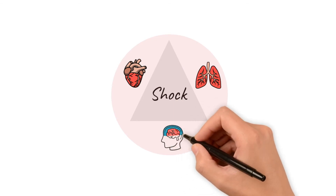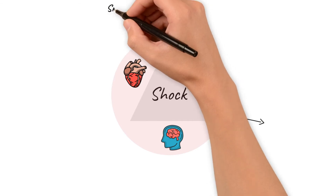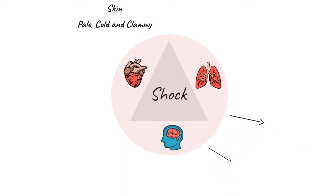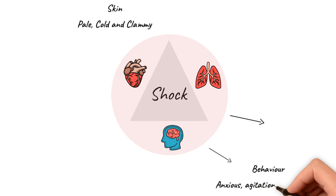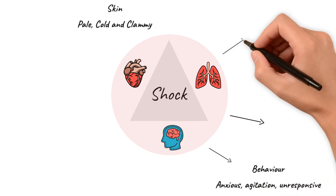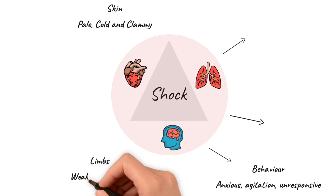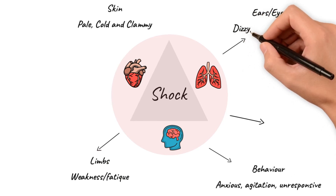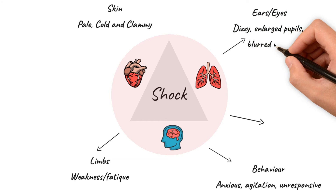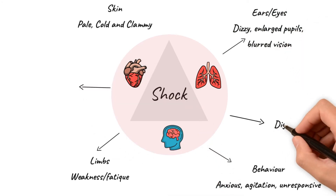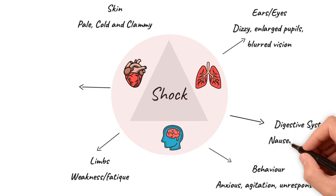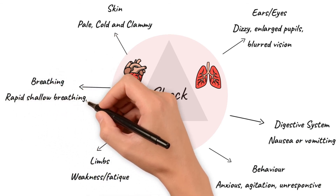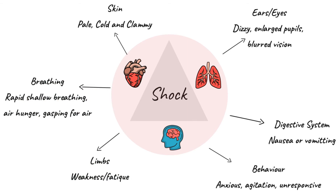Let's look at what happens to our bodies. Our skin is going to change colour — it's going to go very pale, cold and clammy to touch. Our behaviour is going to change; we're going to get very anxious, agitated, and eventually we could become unresponsive. Our limbs are going to feel very weak and fatigued. We're going to feel very dizzy, our pupils are going to enlarge, and we're going to have very blurred vision. We're going to start feeling nauseous or might actually vomit, and our breathing is going to become rapid and shallow. We're also going to have air hunger — that feeling like someone's put a plastic bag over your head and you're gasping for whatever breath you can get.